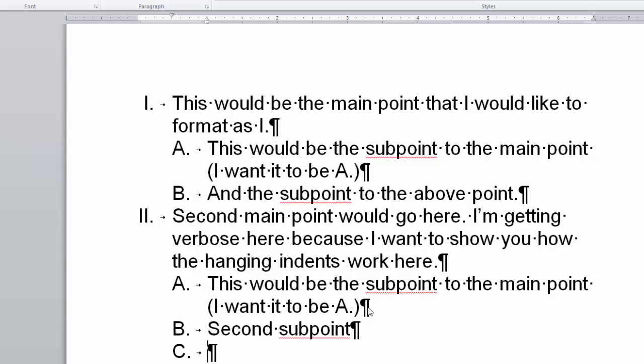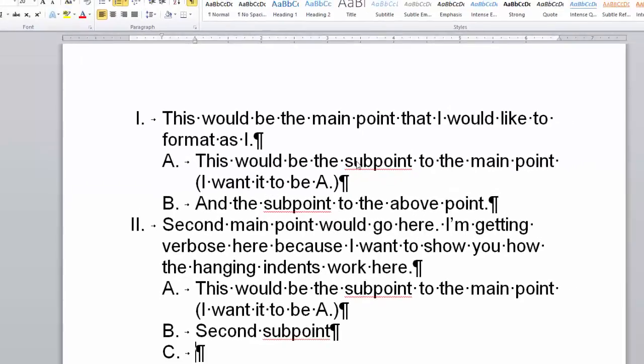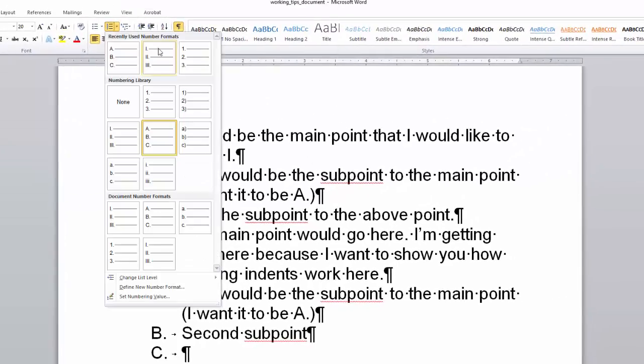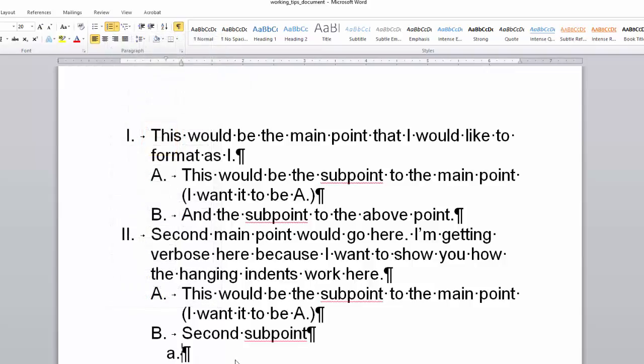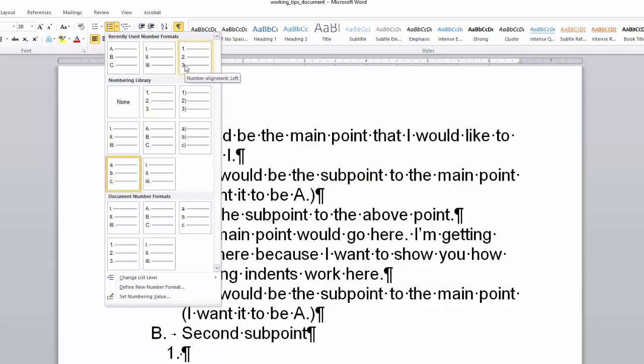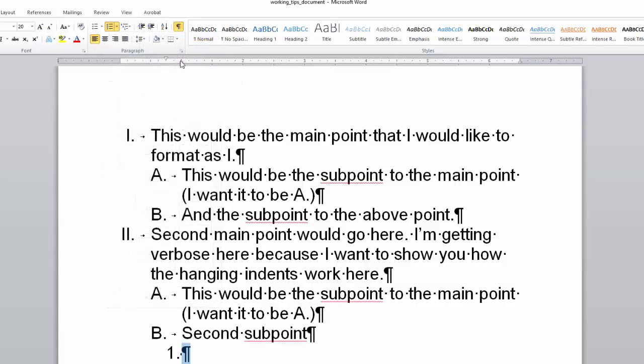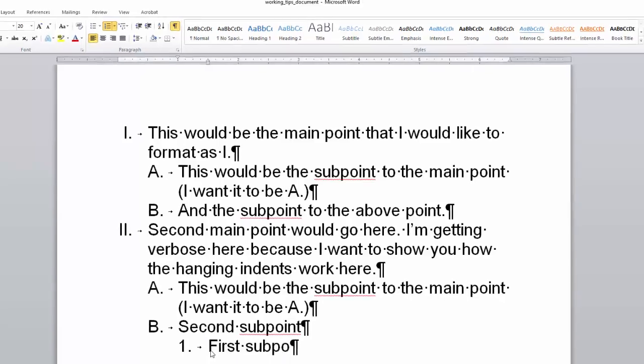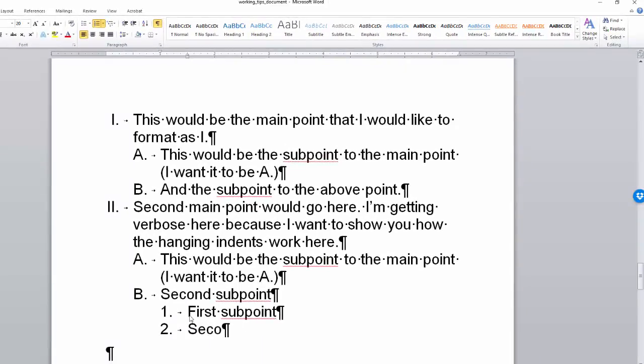Now let's say I want to have a little one under here. I have a couple of options. First is I can go up to the top and choose the one, the little one, right over here. But it changed that. I don't want it to do that. I want to tab in, but notice that it made it an A. So I want to come up to the top and I want to change that A to a one. And then I'm going to, of course, need to fix all of that hanging indent. And now I've got my first subpoint under here and I have my second subpoint.